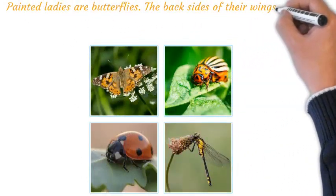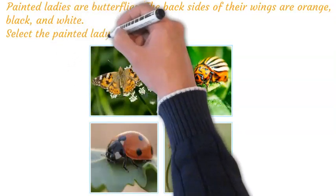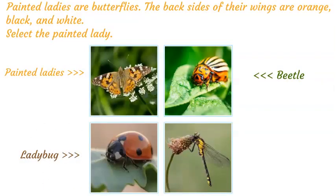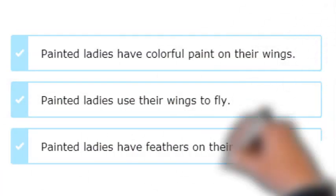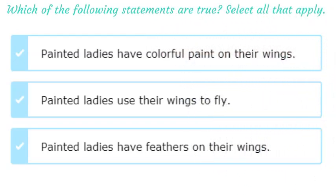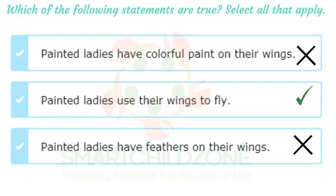Painted ladies are butterflies. The backsides of their wings are orange, black, and white. Select the painted lady. Painted ladies have colorful wings, but they do not have paint on their wings. They can fly thousands of miles. Painted ladies are insects. Birds have feathers on their wings, but insects do not.